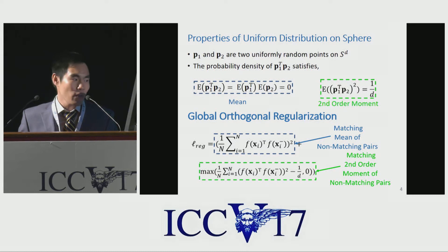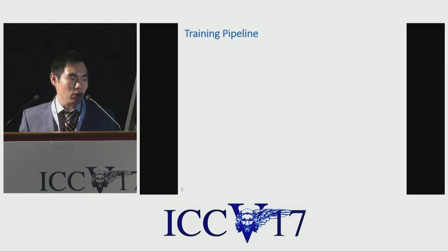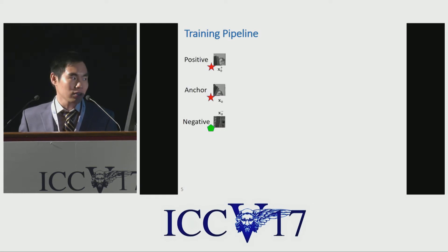Inspired by this, we propose a new regularization called global orthogonal regularization. The basic idea is that we randomly sample negative patches from the dataset, and we want the inner product to have zero mean and 1/D second-order moment. The proposed regularization can be easily embedded into the conventional descriptor learning pipeline. Here we show an example using the triplet loss. Basically, the input is a triplet.